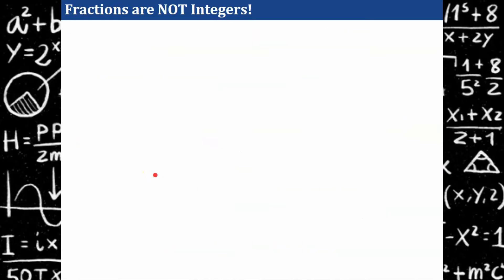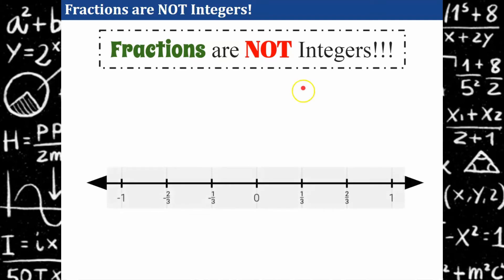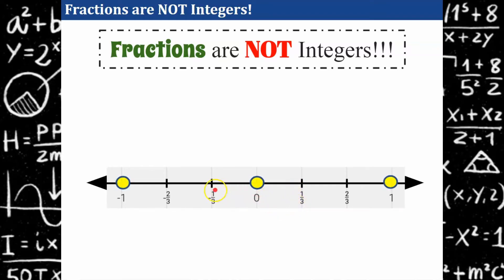Fractions are not integers. Sometimes to understand what something is, we need examples of what something is not. Fractions are not integers because they're not whole numbers — they're parts of wholes. Looking at this number line we can see zero, and zero is an integer. Then we have values that fall between zero and one: one-third and two-thirds. Integers are your whole numbers, your counting numbers, and their opposites. This is not a whole number — it's a part of a whole. So the only integers on this number line are negative one, zero, and one.